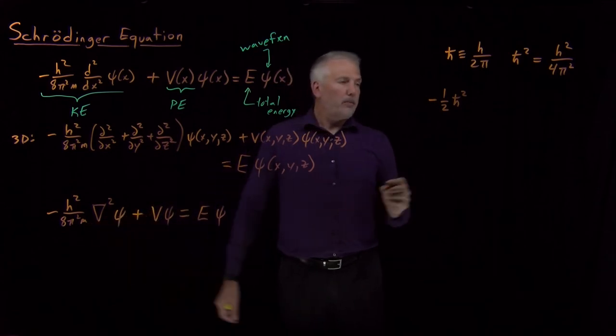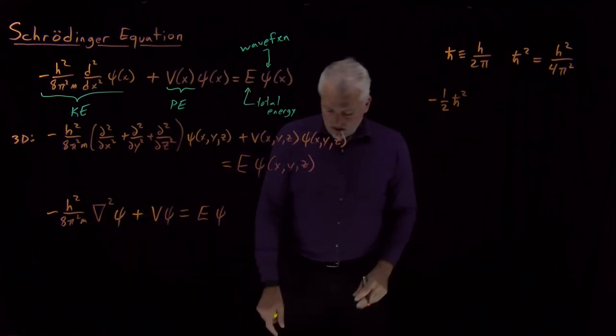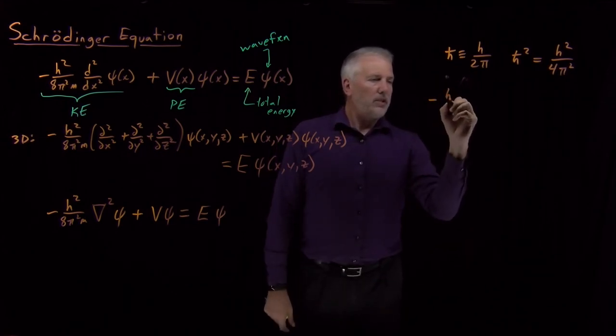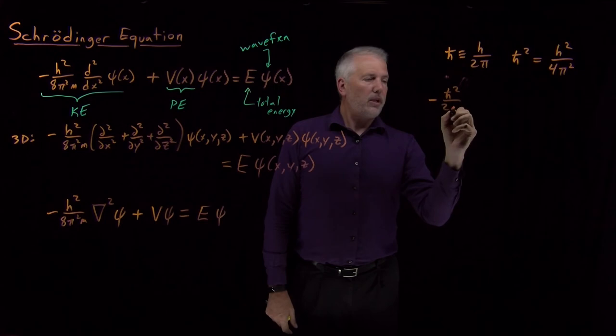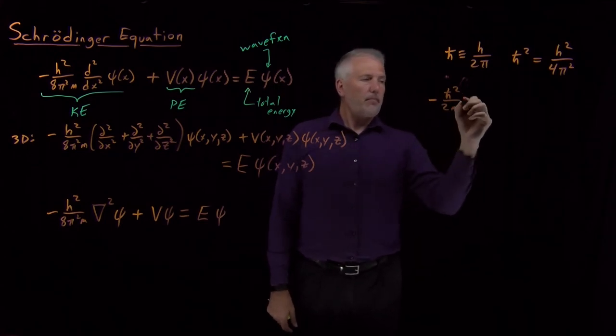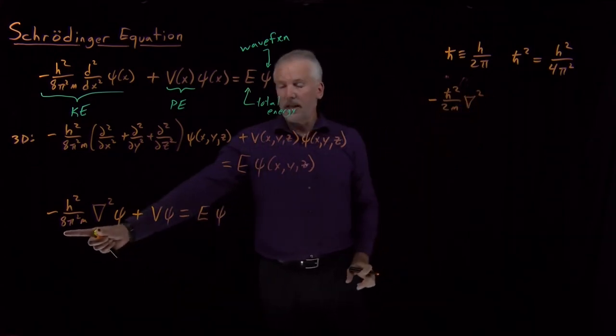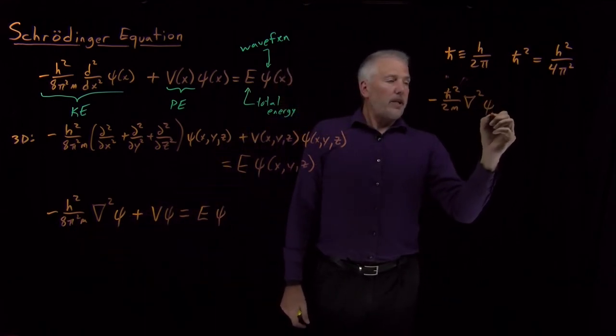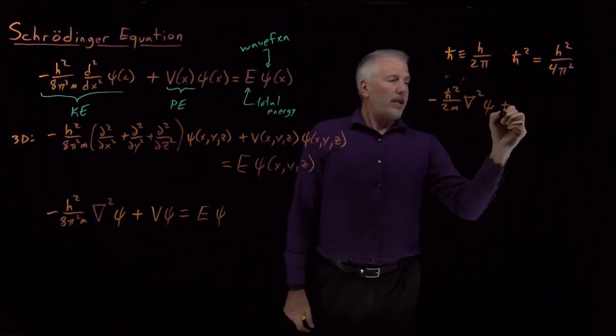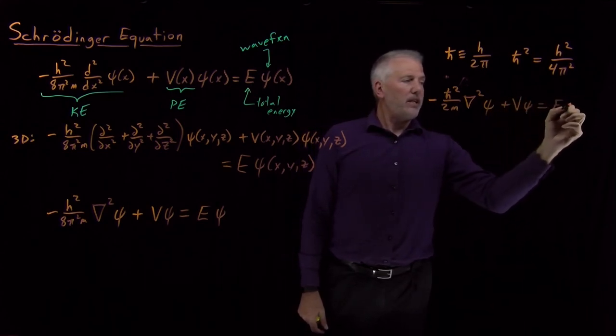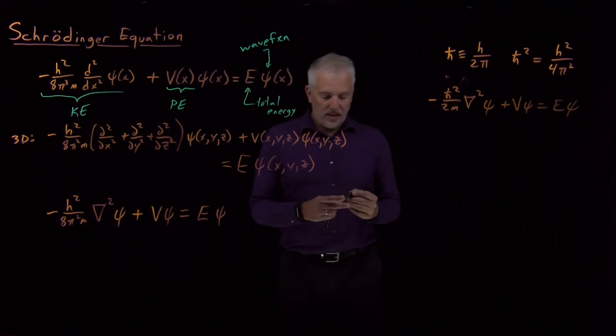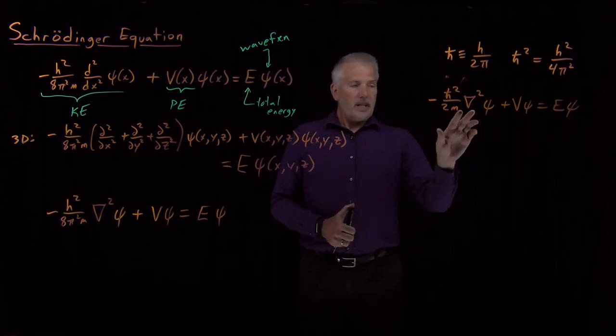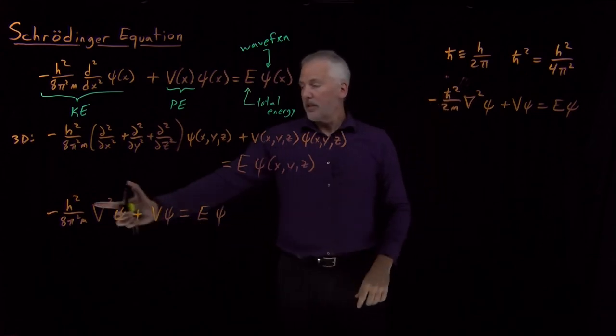I still have a 1/m. Let me write that instead as ℏ² in the numerator, 2m in the denominator, times the ∇². That term is the same as the kinetic energy term I've written down here. If I act on ψ with that, add it to V times ψ, I'm going to get E times ψ. That's yet another way of writing down Schrödinger's equation. Exactly the same as this one. I've just written in terms of ℏ instead of h.